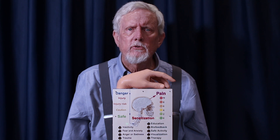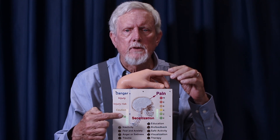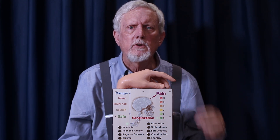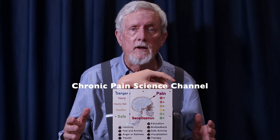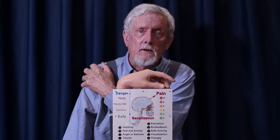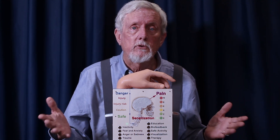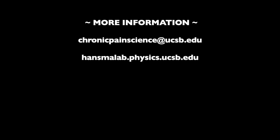Once you have decreased your sensitization, pain works again as it should — as a reliable indication of your real danger, a protection. You can learn more about how to decrease your sensitization from videos on the YouTube Chronic Pain Science channel. This worked for me to overcome five years of chronic shoulder pain. It worked for my friends. It's worked for over 40 subjects who have been in our research studies here at UCSB. We hope it works for you too. See you next week.